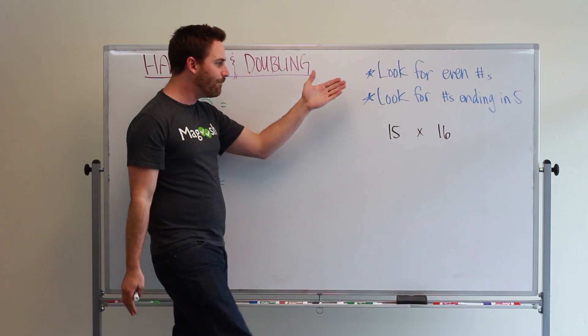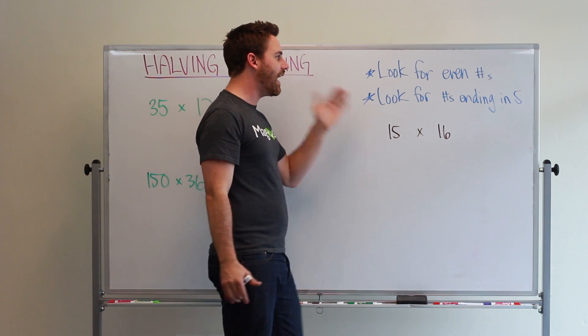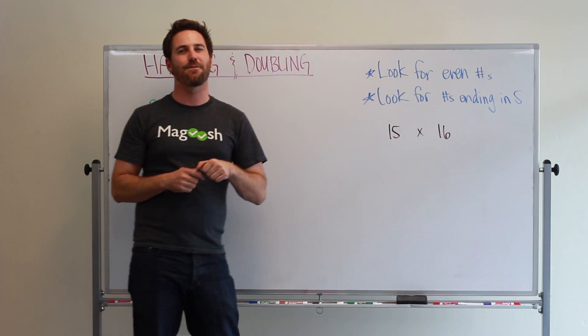Two things to look for when applying the halving and doubling rule: look for even numbers and look for numbers ending in five.